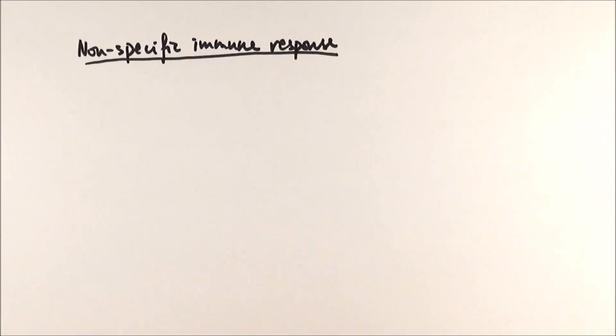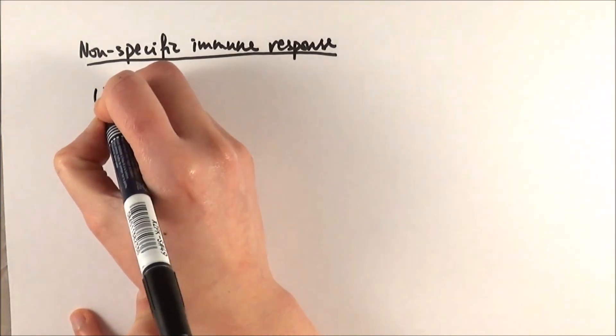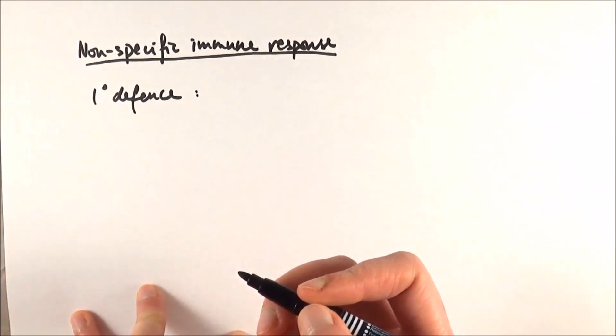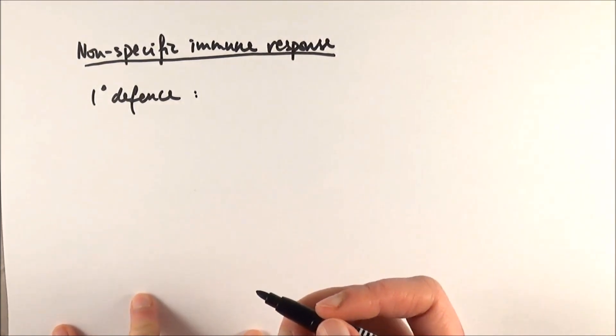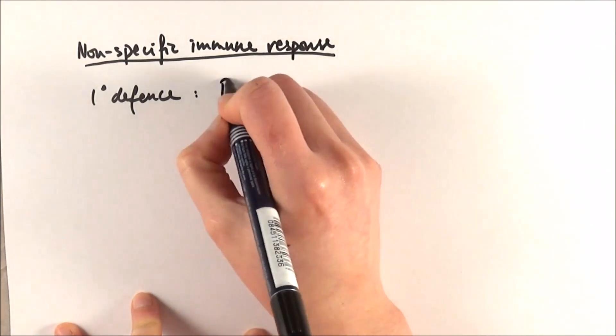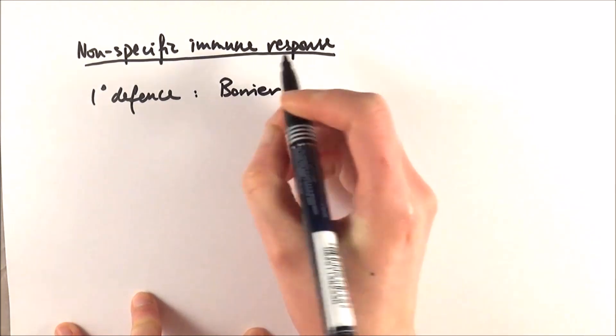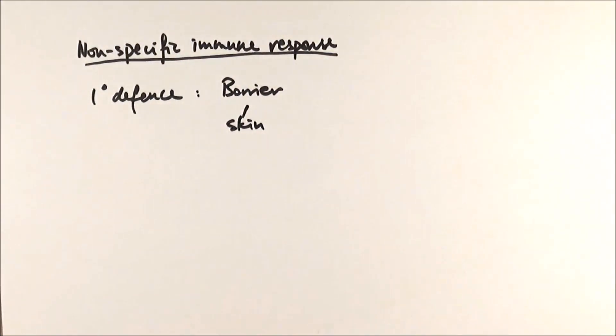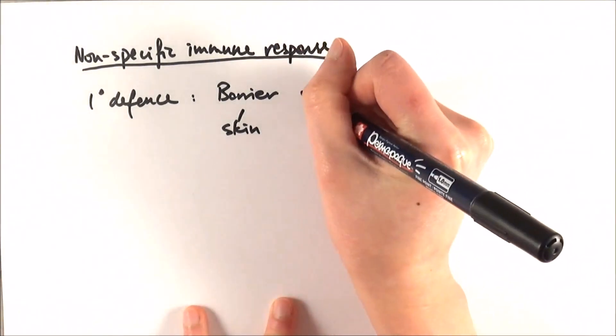There are different things we can consider. First is the primary defense, which is when the body is preventing pathogen entry in the first place. For example, we can have the barrier method. Skin would be the first barrier, the first line of defense to stop the pathogen from getting into our system.